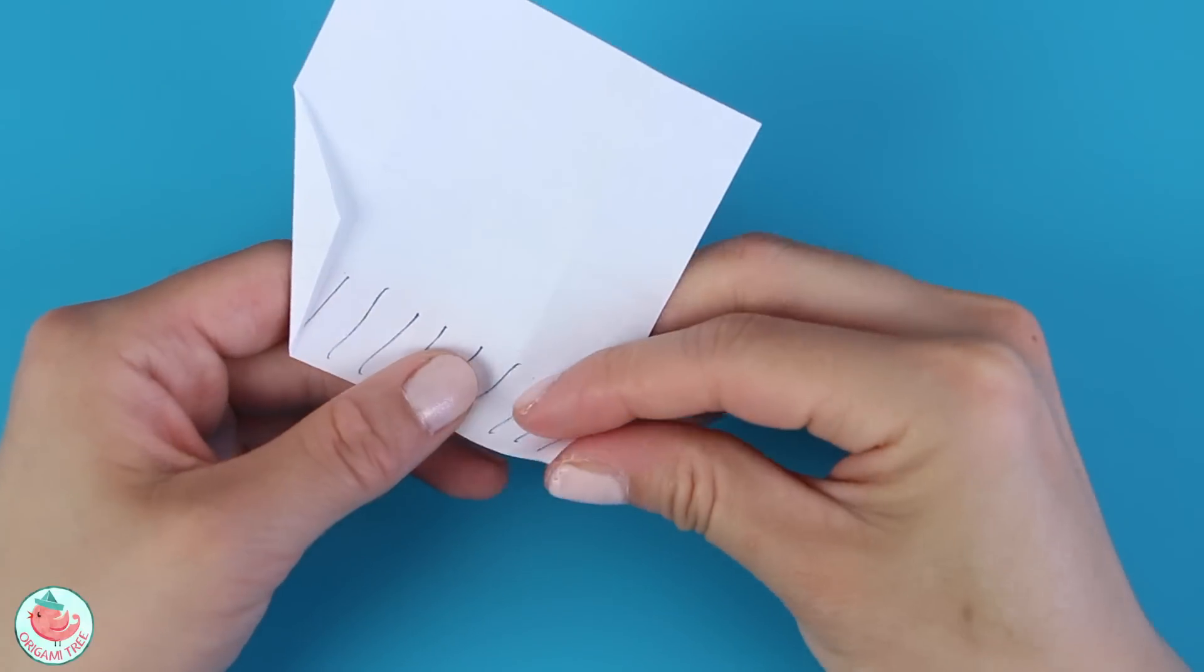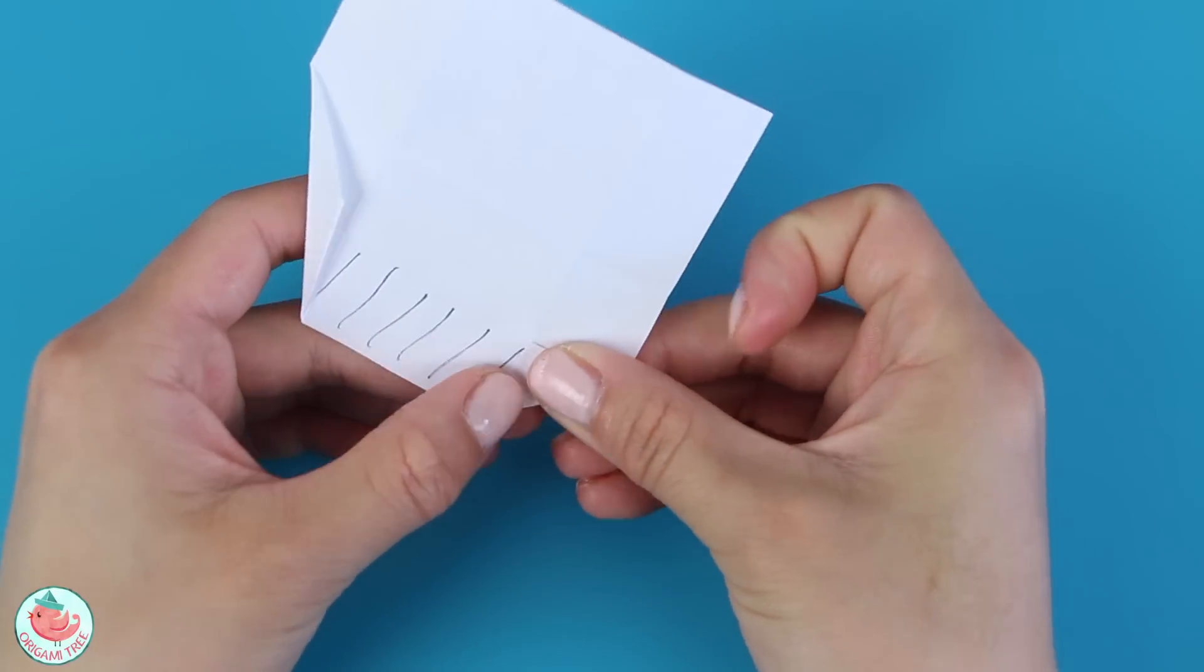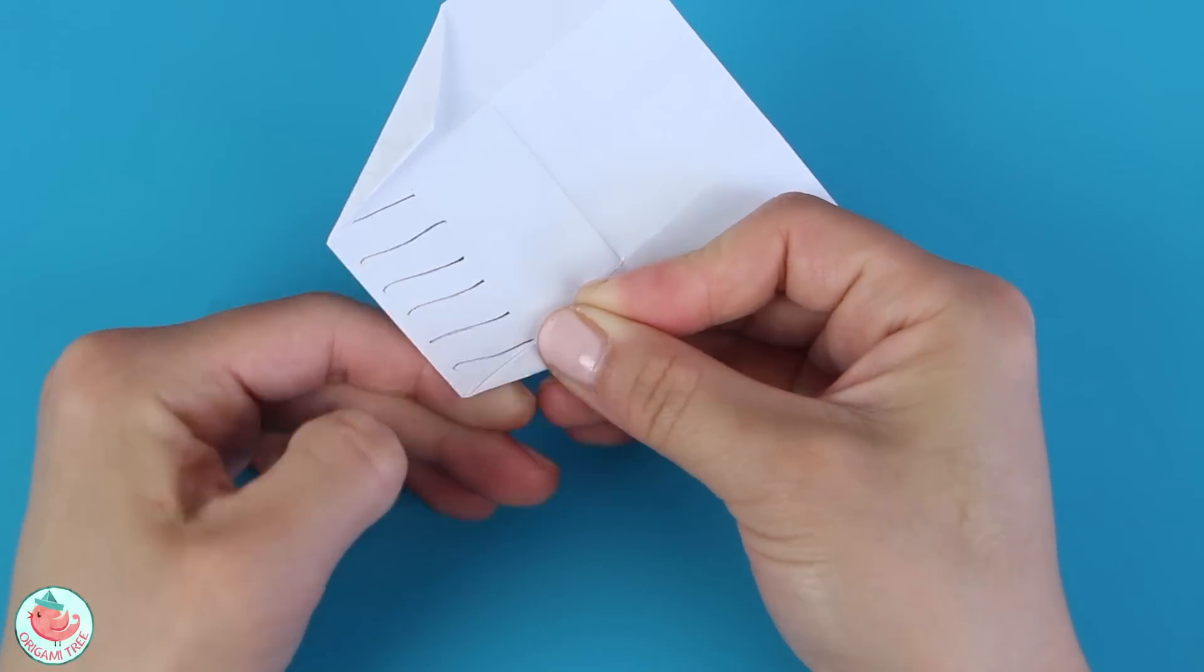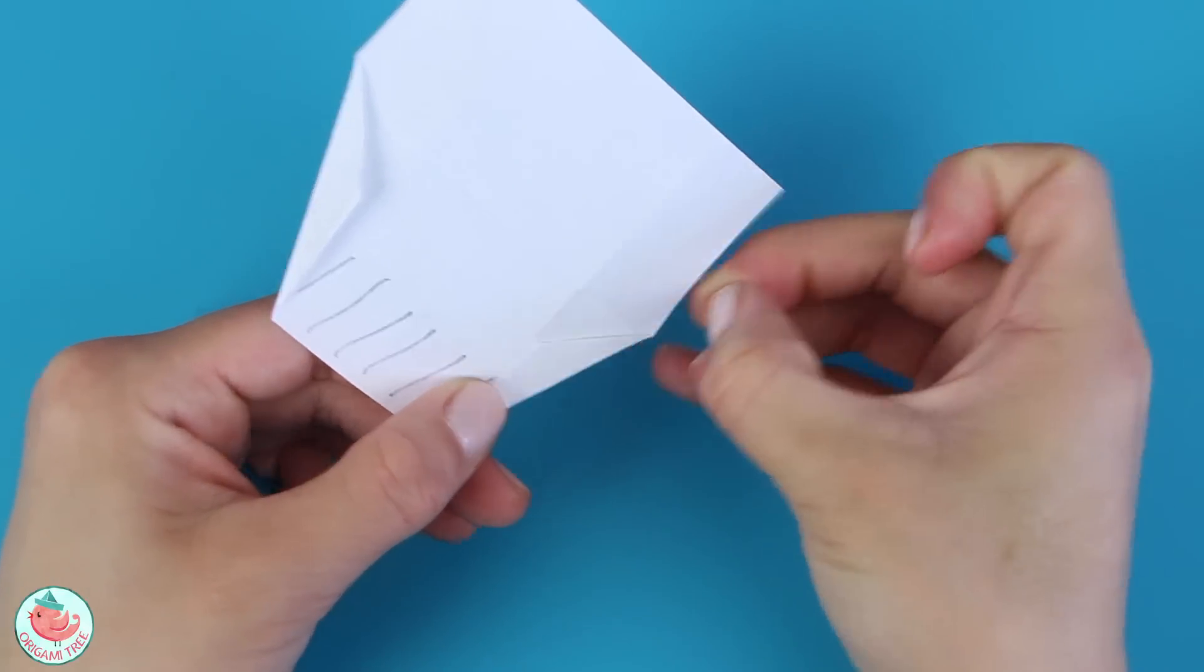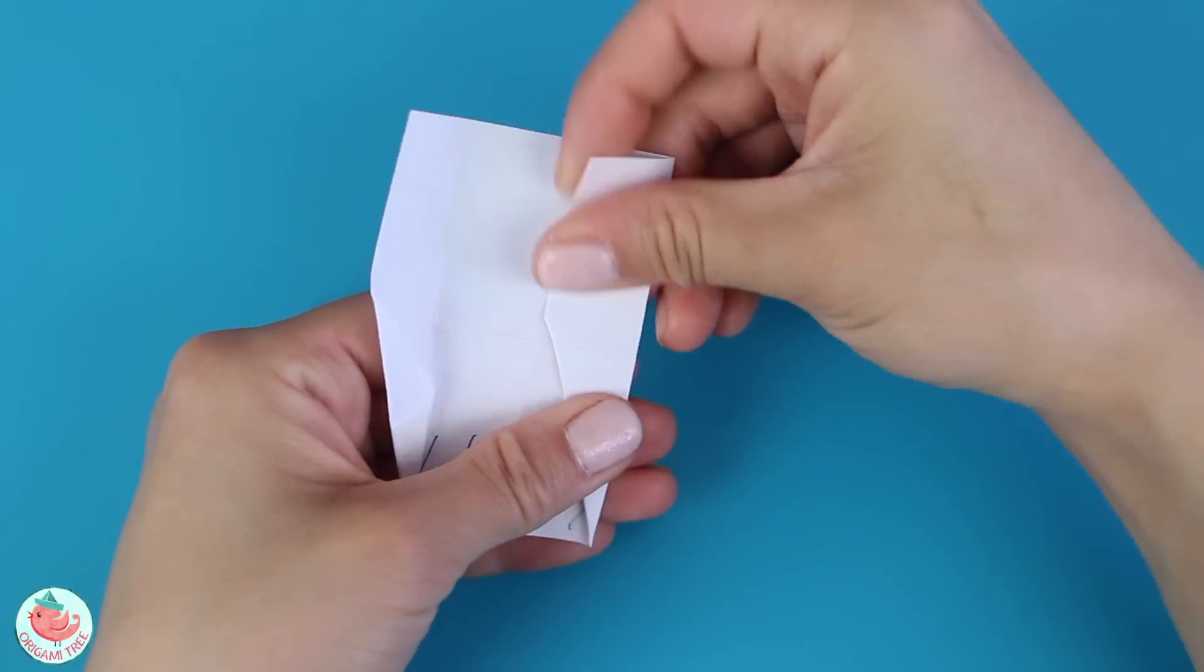Repeat the same thing on the right side. So you're going to fold it diagonally to this first crease. Crease that in and do it again. And next, you want to take these two flaps and fold it inwards towards the center.